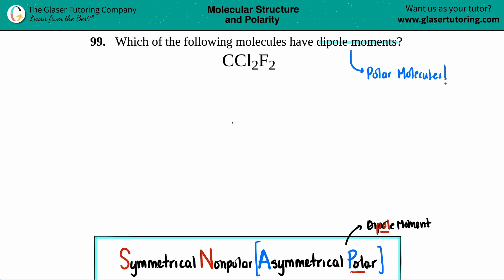As we're getting our feet wet learning how to figure out if something has a dipole moment, always take a step back and draw the Lewis structure. The Lewis structure can give you a lot of answers. It can tell you about bond polarity, actual molecule polarity, dipole moments, hybridization, and molecular geometry. So if they don't say to draw the Lewis structure, just take a few seconds and draw it out so you can actually see what's going on.